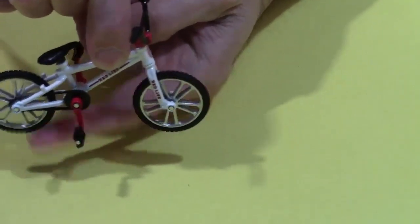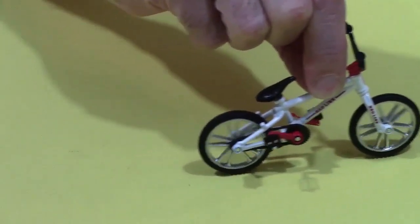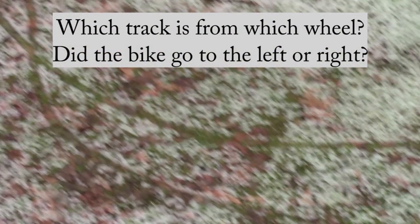I think some of you didn't actually pause the video for my first question, so I'm going to give you another chance. I want you to pause now, look at the tracks, and answer two questions. Which track came from which wheel, and did the bike go to the left or right?